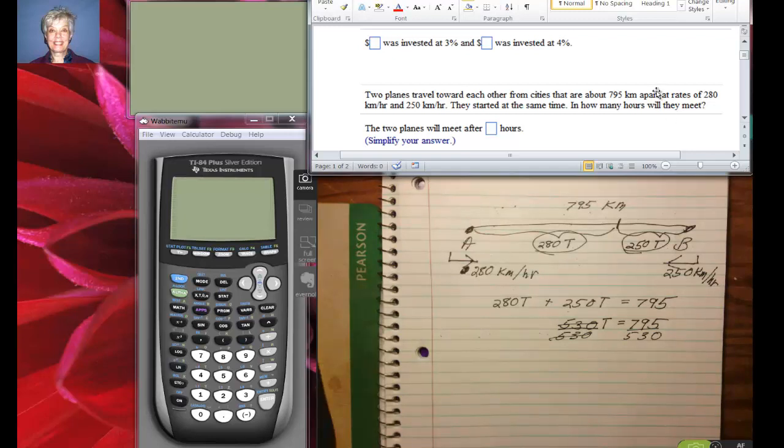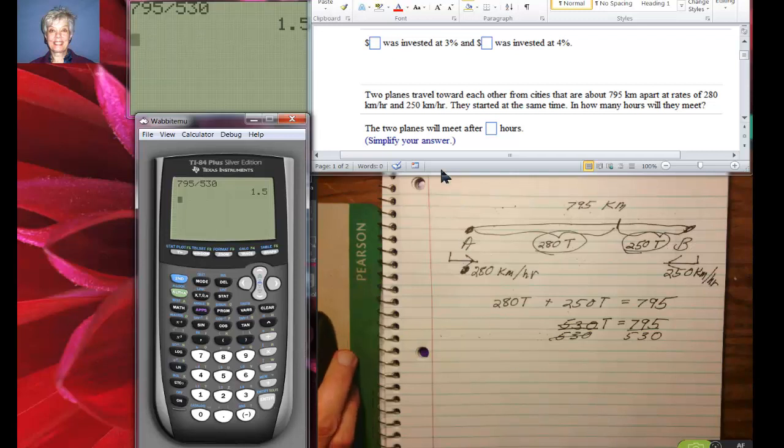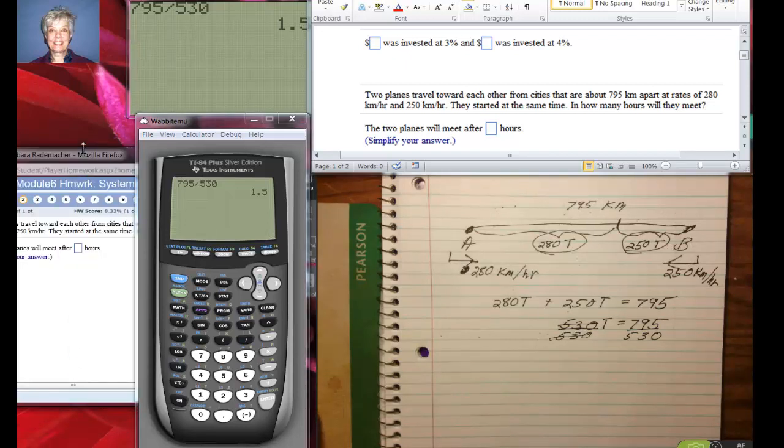All right, I am going to say 795 divided by 530, and I don't know, let me say enter first. 1.5 - one and a half hours. And it doesn't say that we have to answer with a fraction, so let's try 1.5 down here.